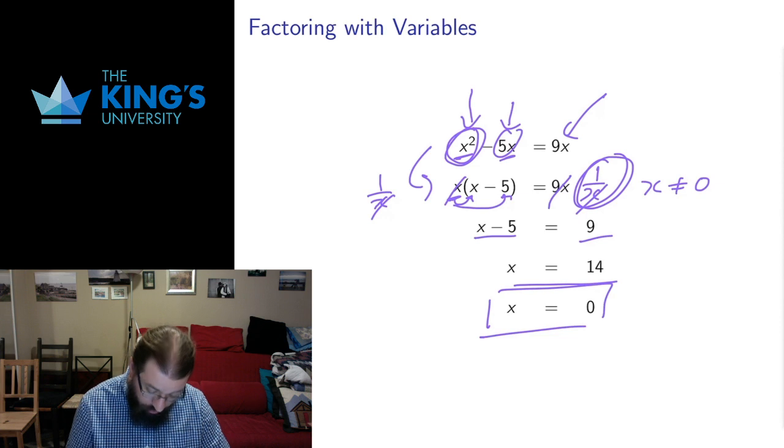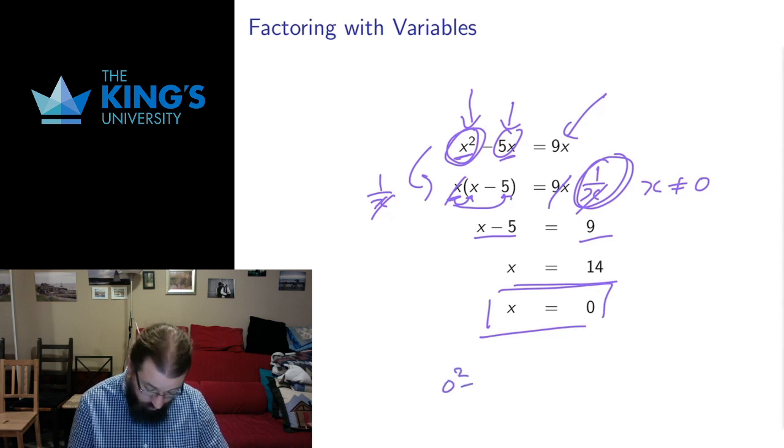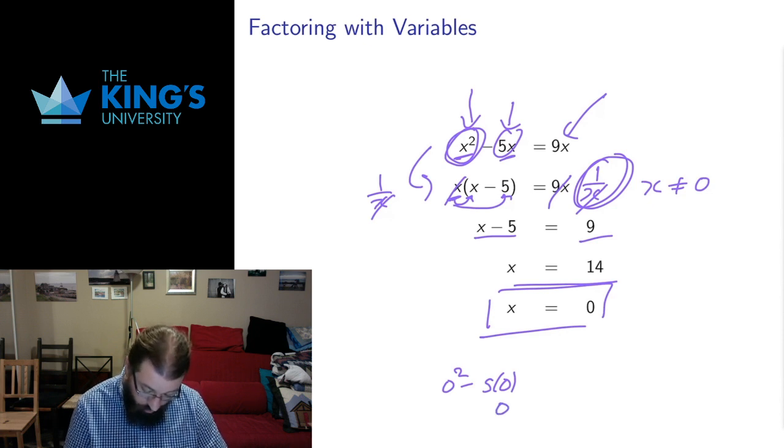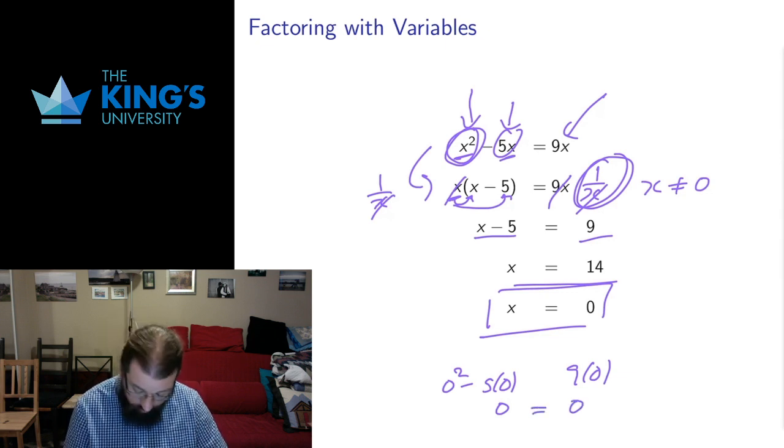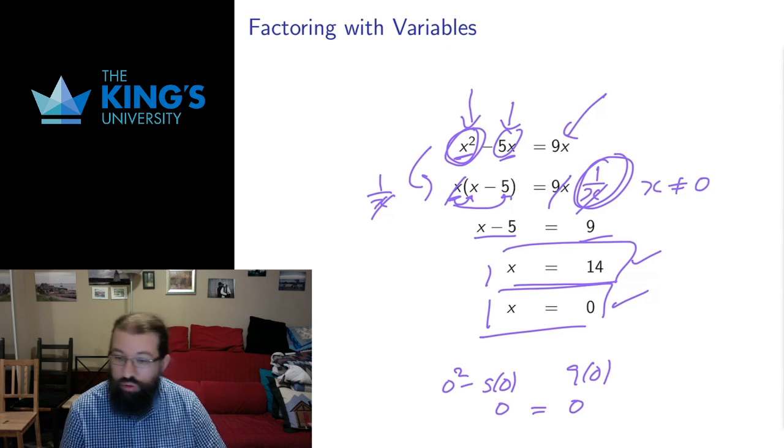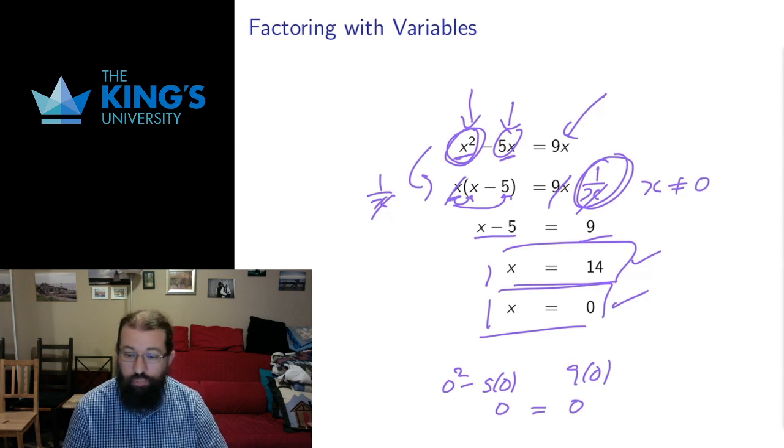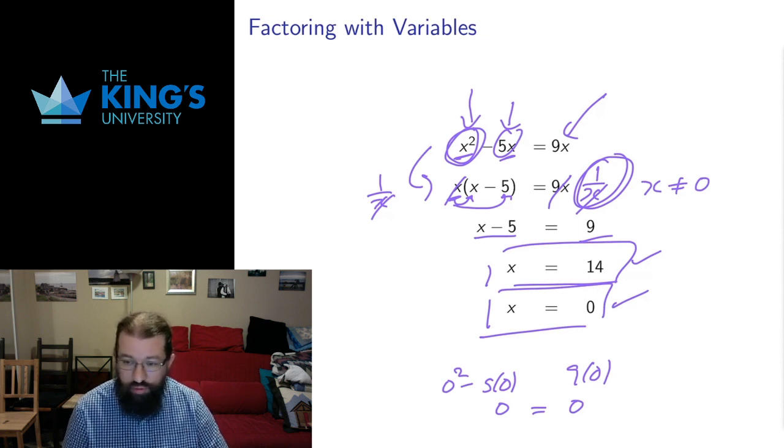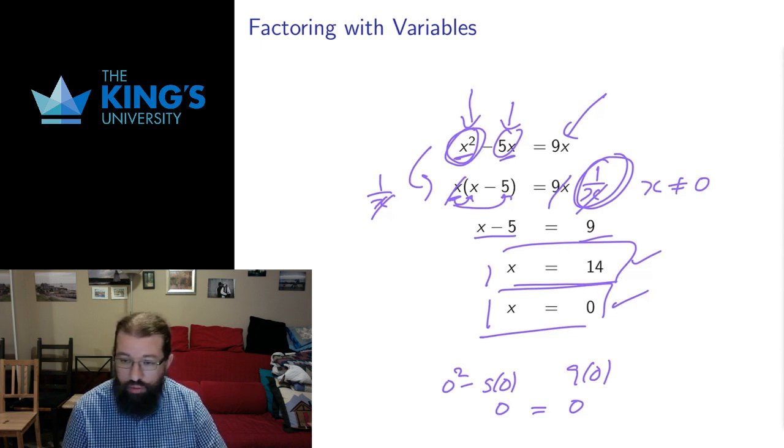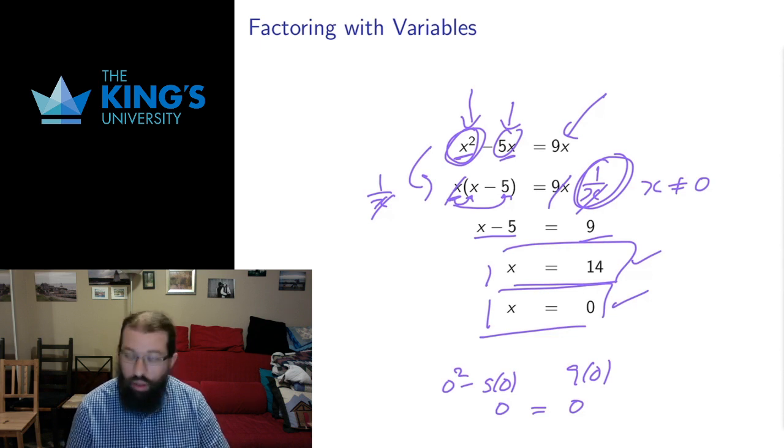And I can go back and check. If I put x equals 0 in my original equation, I would get 0 squared minus 5 times 0. On the left, that would be 0. On the right, I would get 9 times 0. That would be 0. Those are in fact equal. So x equals 0 is also a solution. This has two solutions, and I get the second solution by remembering whenever I pull something out and divide by it, I have to check that it might have been 0. This is very frequent when we're dealing with factoring. We're often pulling things out and checking them, cancelling them off. So this is good practice when you're factoring things off to be aware of the possibility that the thing you factored off might have been 0.